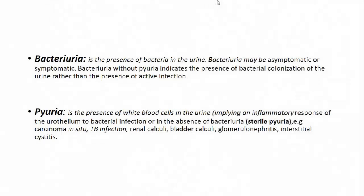Pyuria is the presence of WBCs in the urine. When you see leukocytes in the urine, consider two things: whether it is due to infection or inflammation. There is also another entity — sterile pyuria — where there are only leukocytes without any organisms. When you see this clinical scenario, consider causes like carcinoma in situ, TB, stones, interstitial cystitis, and glomerulonephritis. Do not let the patient go home if the culture is negative; think about these other causes.